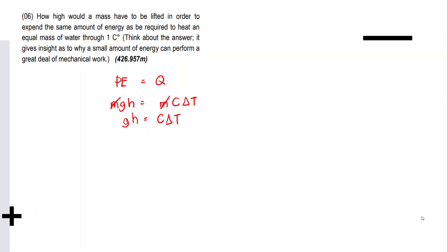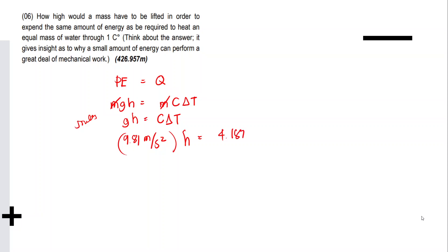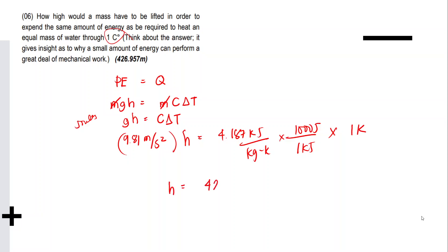On this side, since mgh is in joules — g is 9.81 m/s². c is 4.187 kJ/kg·K, so let's convert to joules: 1 kJ = 1000 J. ΔT is 1 Celsius degree, also equivalent to 1 Kelvin. So h is equivalent to 426.8094 meters.